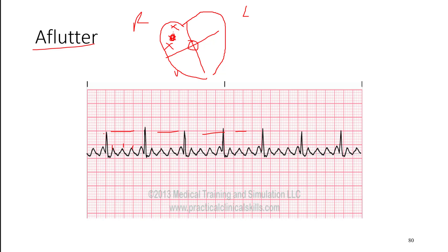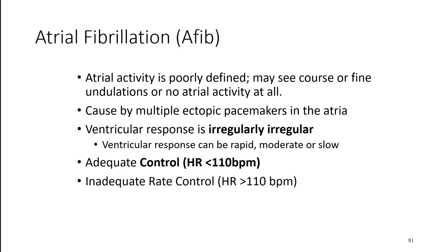The rate is generally pretty normal — probably somewhere around 72 beats per minute roughly. So heart rate is fairly normal. These people may have symptoms like palpitations potentially, but it's not as concerning maybe as its cousin AFib.